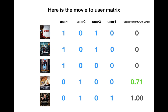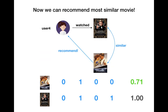While user-based collaborative filtering used the user-to-movie matrix, item-based collaborative filtering uses the movie-to-user matrix. Every movie is now a vector representation using user information. For example, Ant-Man was liked by user 1 and user 3, so its vector is 1, 0, 1, 0. Using cosine similarity, Titanic has the highest similarity score with Gatsby, meaning they are similar to each other. So we can recommend Titanic to user 4.